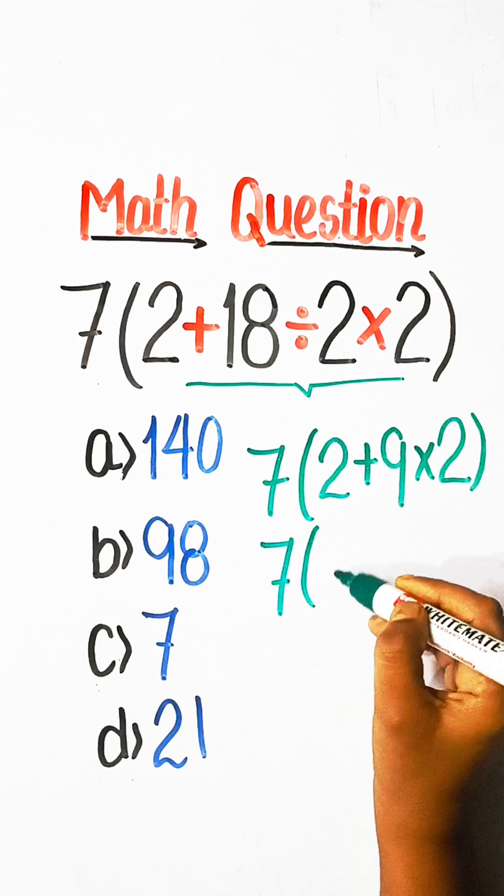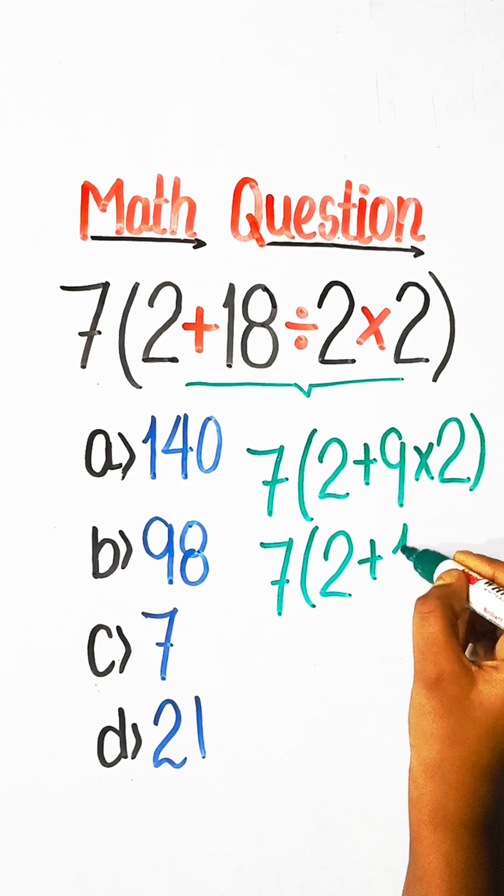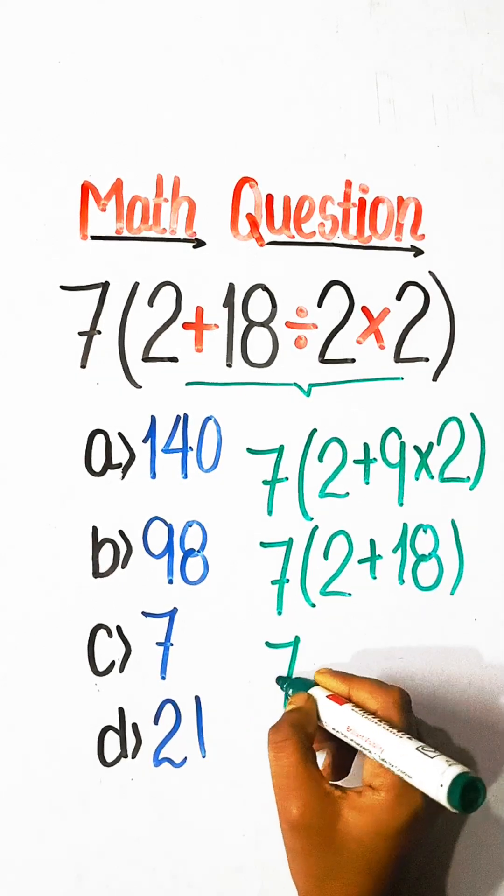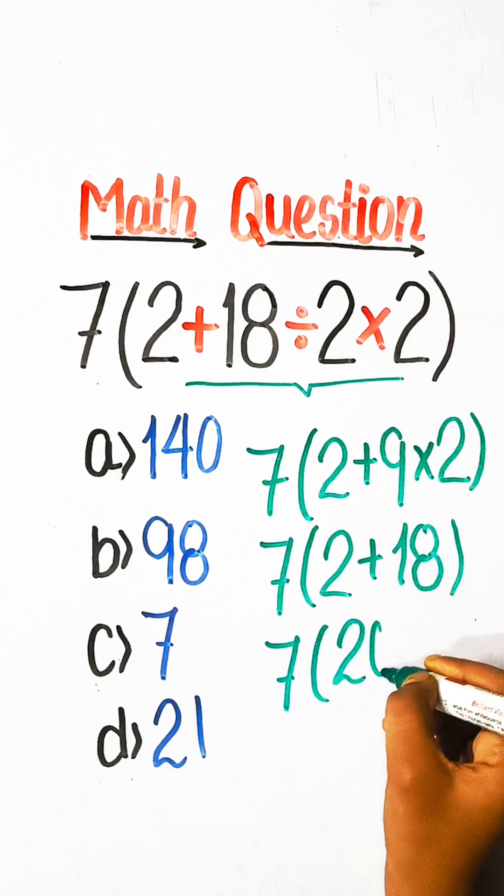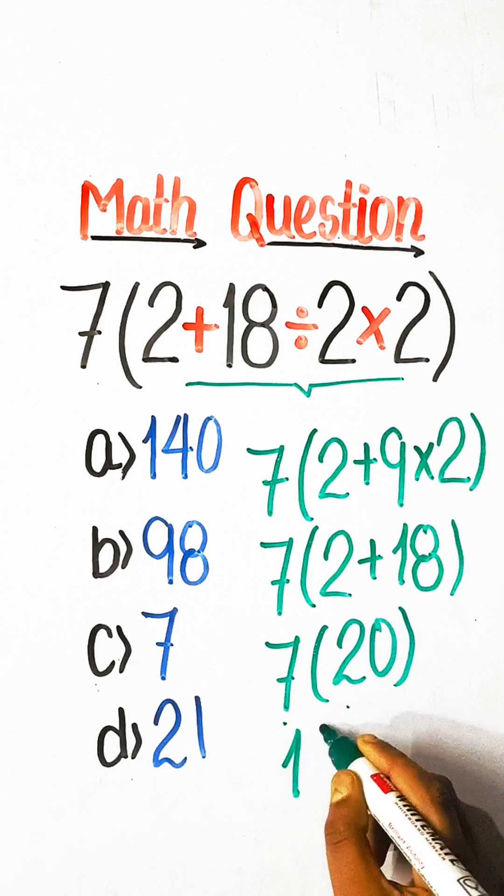7(2+18). 2 plus 18 is 20, so 7 multiply by 20 is 140.